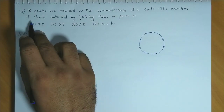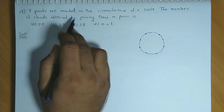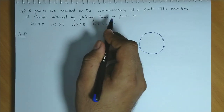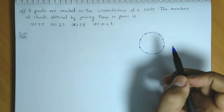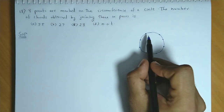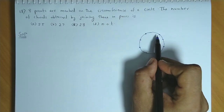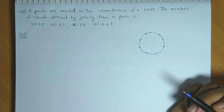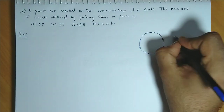The number of chords obtained by joining these in pairs: obviously, to draw one chord we need to select 2 points at a time.